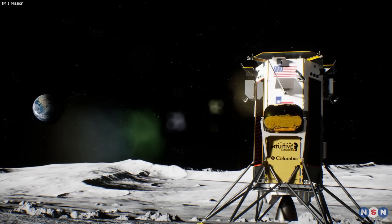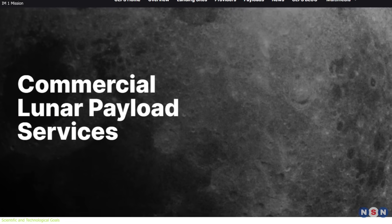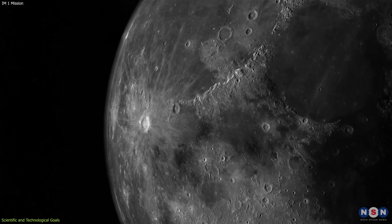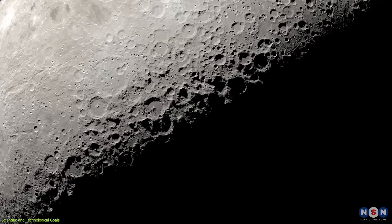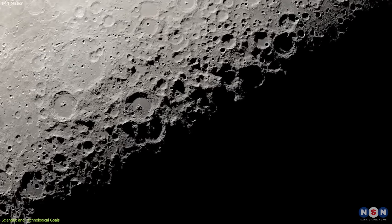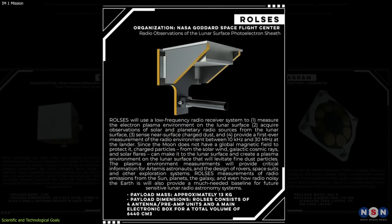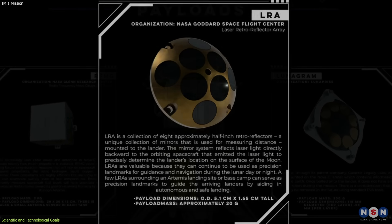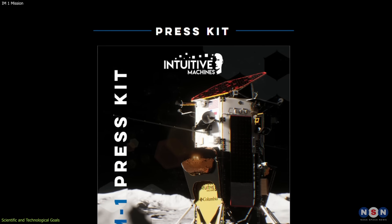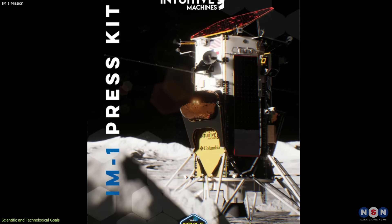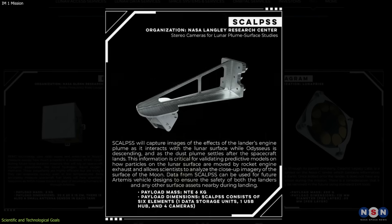The IM-1 mission is not only a demonstration of the capabilities and benefits of the Commercial Lunar Payload Services Initiative, but also a valuable opportunity to advance the scientific and technological knowledge of the Moon, especially its polar regions, which are of high interest for future exploration and utilization. The six NASA payloads we will discuss now that the lander will carry are based on the document that NASA released recently this year. However, this document may not reflect the most updated payload manifest and mission details, as some changes may have occurred since then.